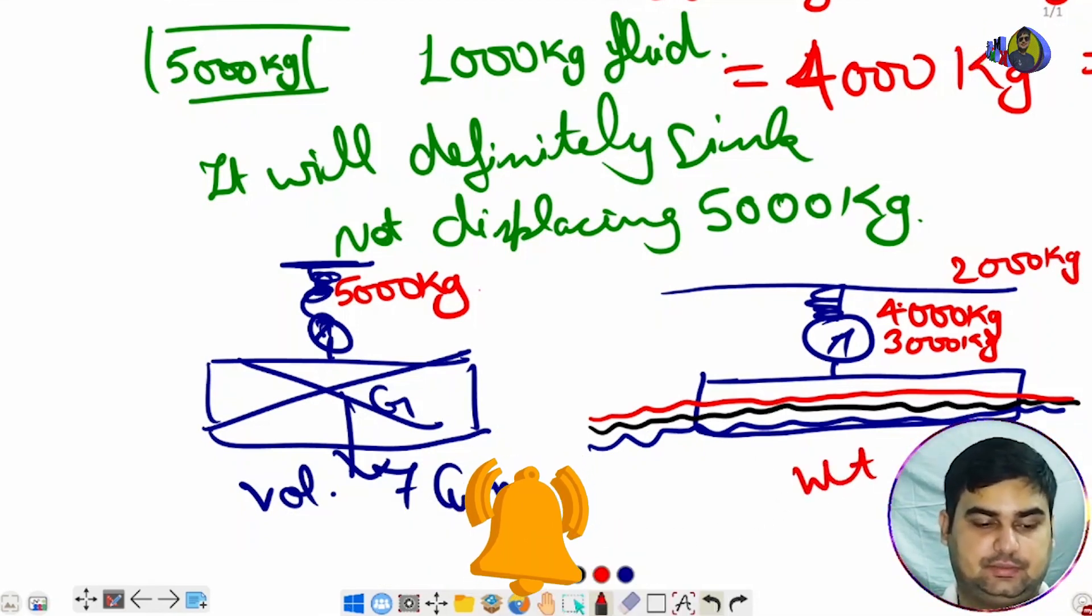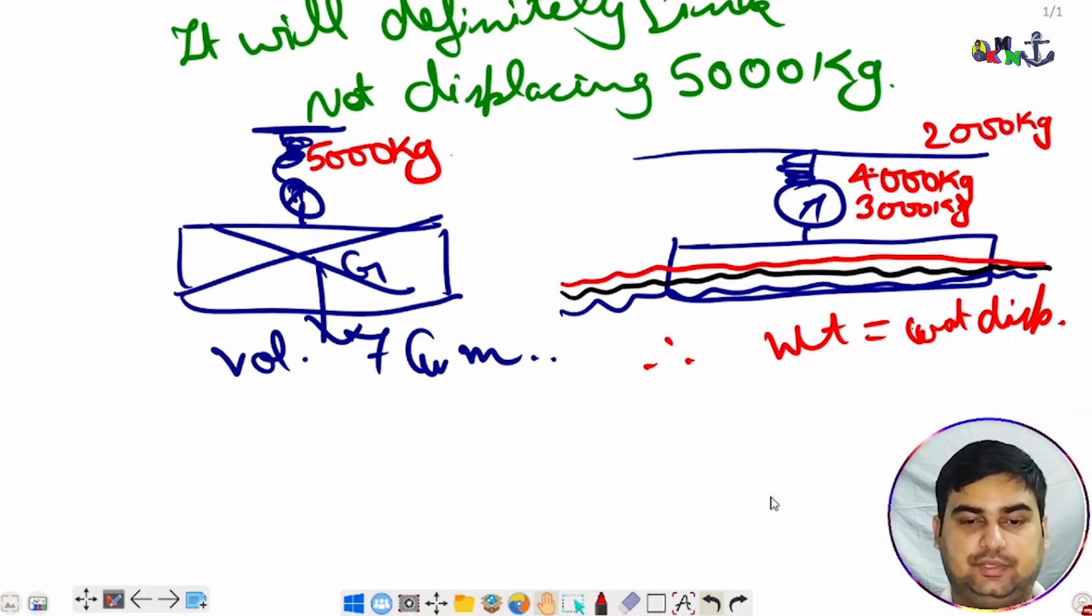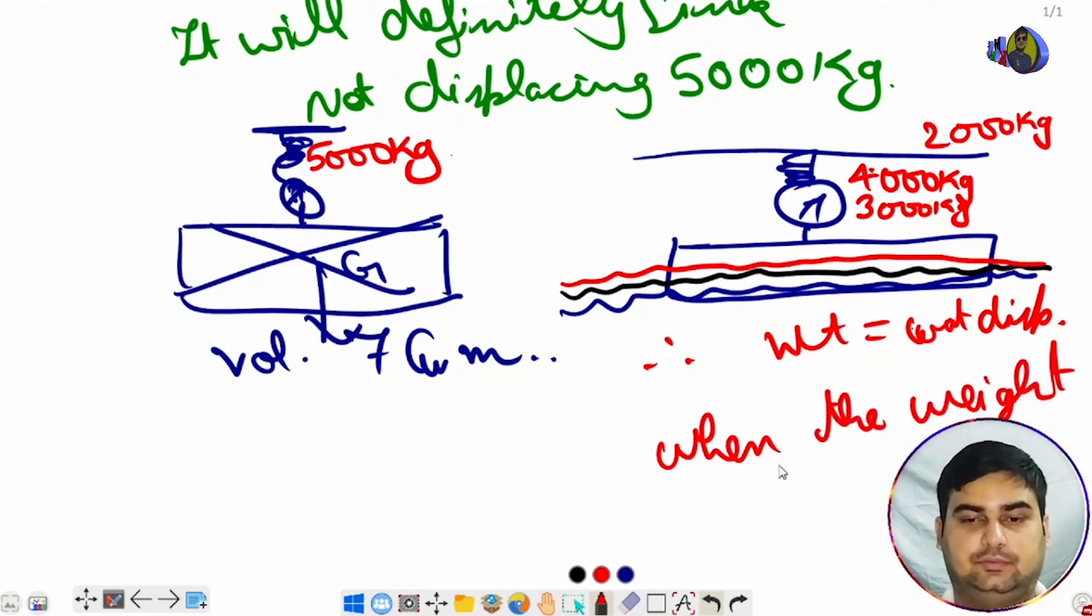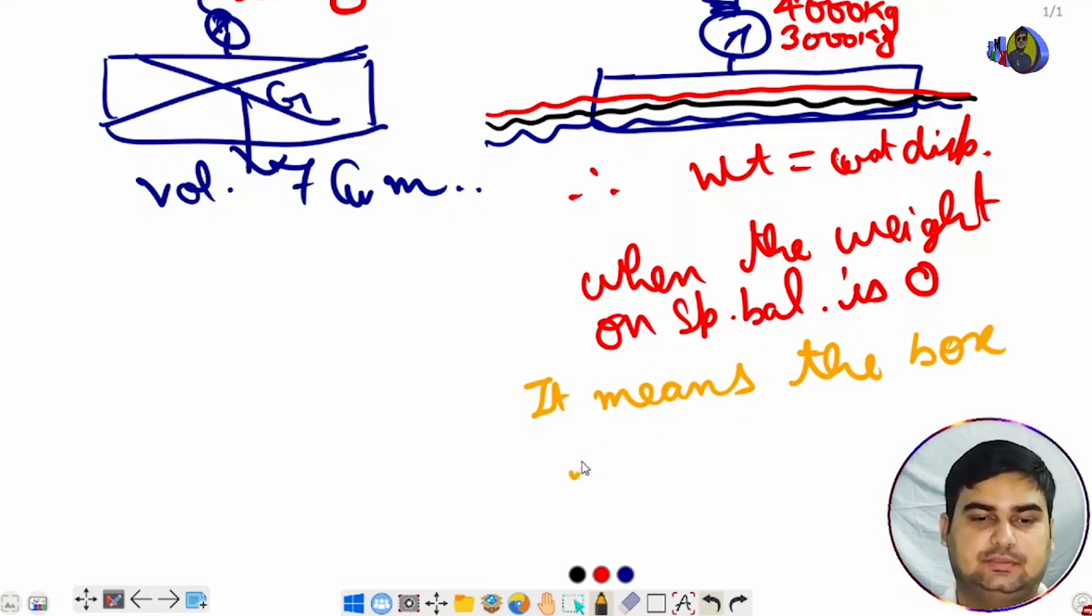At one point, the weight equals the water displaced. When the weight on spring balance is zero, this simply means the box is floating.